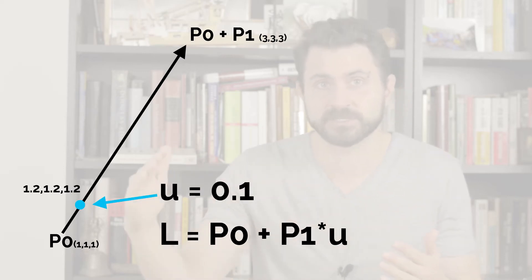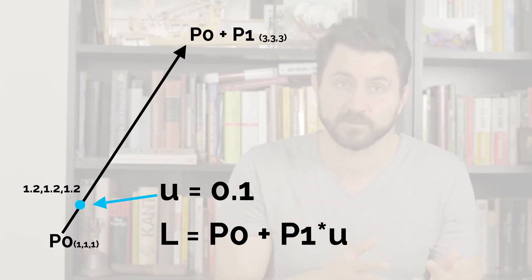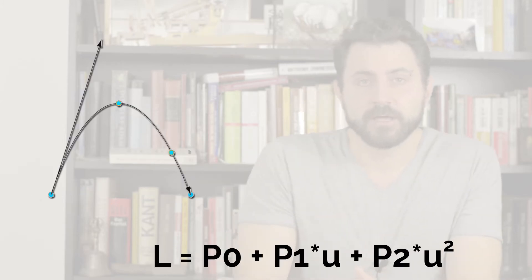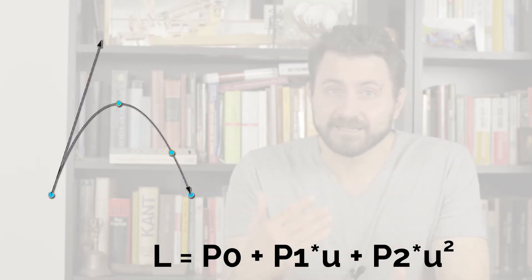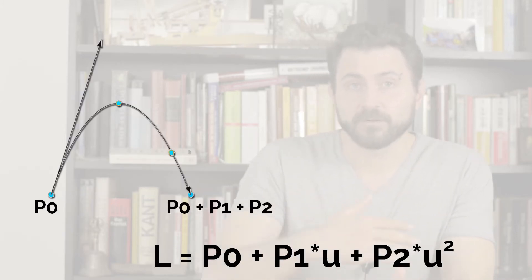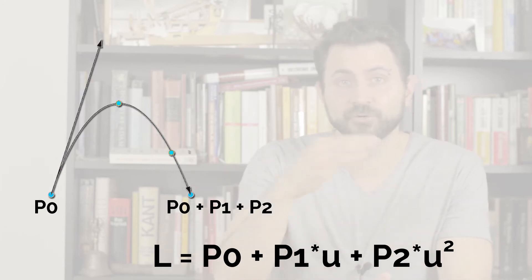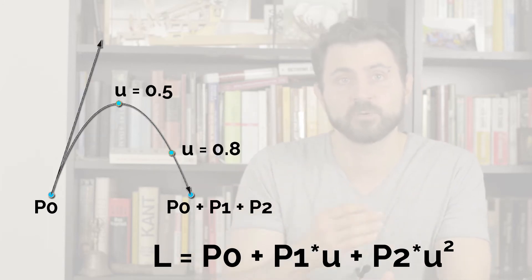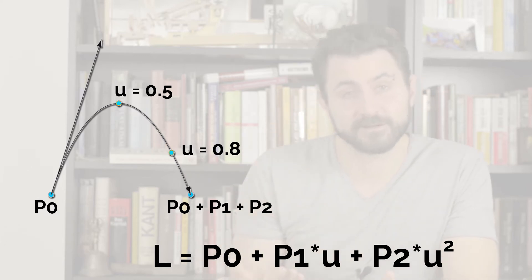That gives you a continuous representation, in contrast to a discrete one. If you simply expand this formula a little bit, you get a parabolic arc — slide your U values from 0 to 1 and they will trace out a parabolic arc. Now this is where the story of NURBS starts, and we will go into detail some other time.